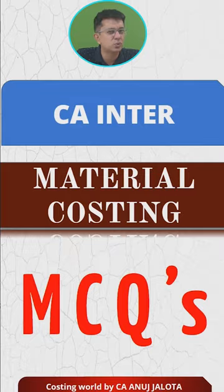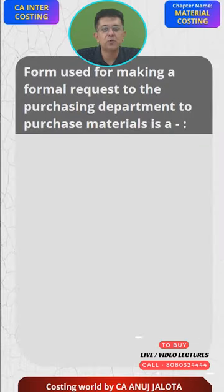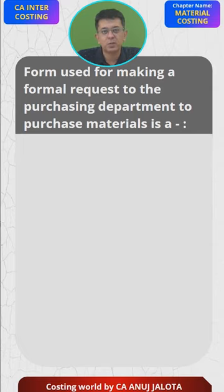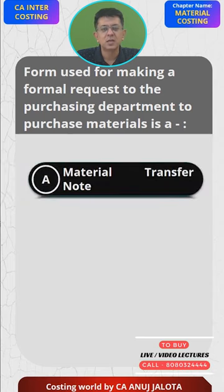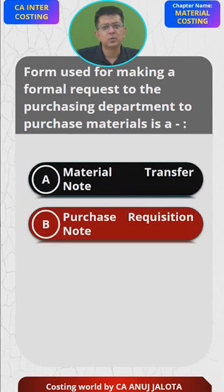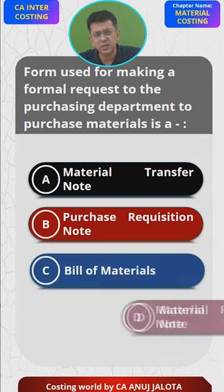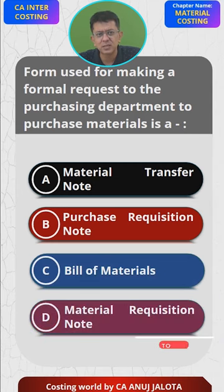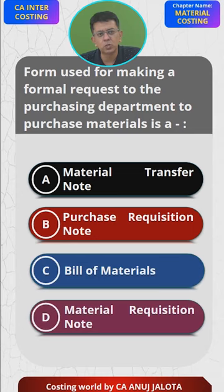So let's do the MCQ. The form used for making a formal request to the purchase department to purchase material is called: A) Material Transfer Note, B) Purchase Requisition Note, C) Bill of Materials, or D) Material Requisition Note.